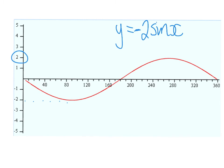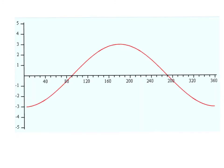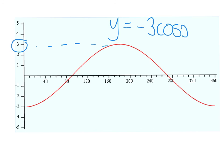And the last one — it's not a sine graph. It's got that lovely valley shape, but it's upside down. So it's a negative cosine. The highest number it goes to is 3, so this is a negative 3 cos x graph.